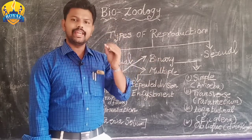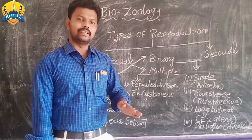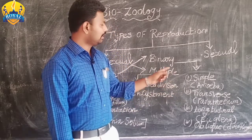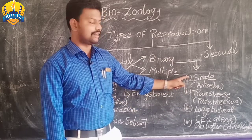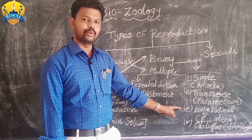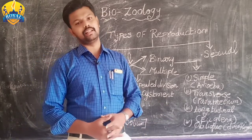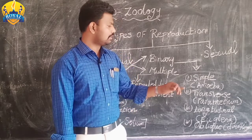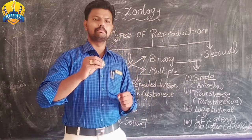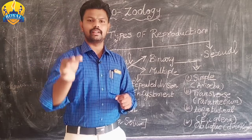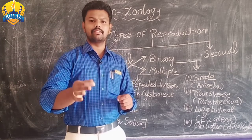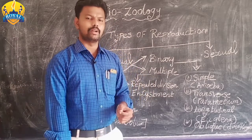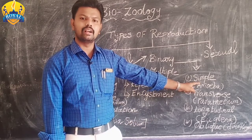Based on the plane of division, binary fission is classified into four types: simple binary fission, transverse binary fission, longitudinal binary fission, and oblique binary fission. In simple binary fission, the cell divides without any specific plane or axis. Amoeba is an example of simple binary fission.